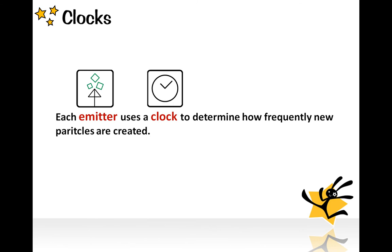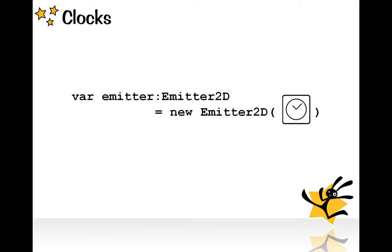As I mentioned in previous tutorials, each emitter uses a clock to determine how frequently new particles are created. A clock is assigned to an emitter through the emitter's constructor's first parameter.